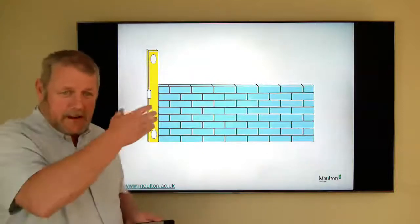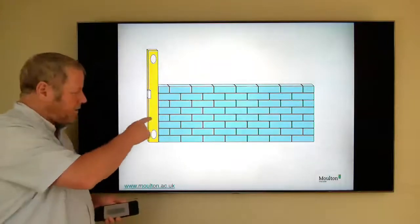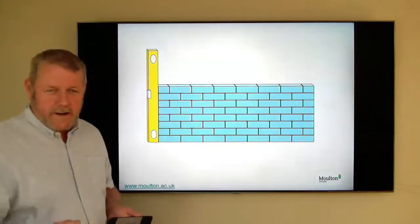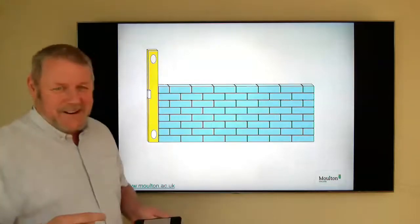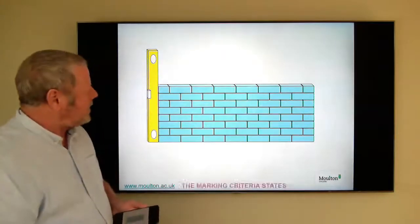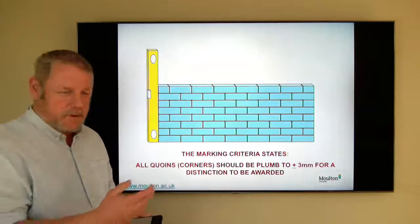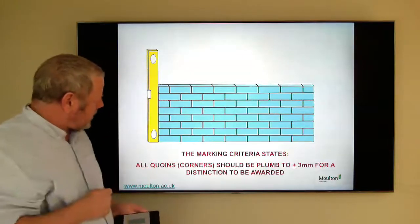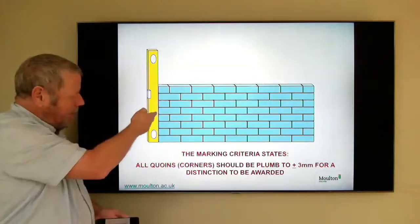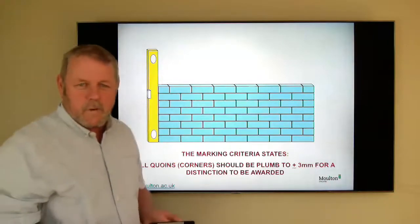Then looking at plumb. So maintaining that vertical alignment we refer to as plumb. And we will check the corners. But they have a name themselves. So a corner, it has a specific name, it's called a coin, Q-U-I-N. And we will be checking those and there is a standard. Again, plus or minus three millimetres if you want to achieve a distinction. So that's sticking the, you know, placing the level up the wall, the spirit level and making sure that the bubble will be in the middle and that there are no gaps within between the level and the wall at the corners.